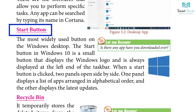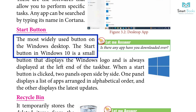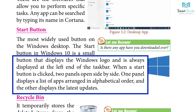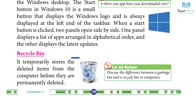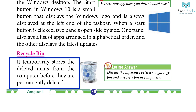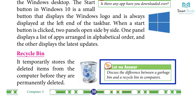Start Button: The most widely used button on the Windows desktop, the Start button in Windows 10 is a small button that displays the Windows logo and is always displayed at the left end of the taskbar. When the Start button is clicked, two panels open side by side: one panel displays a list of apps arranged in alphabetical order, and the other displays the latest updates. Recycle Bin temporarily stores deleted items from the computer before they are permanently deleted.